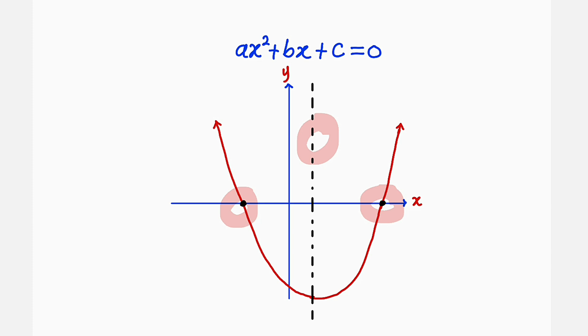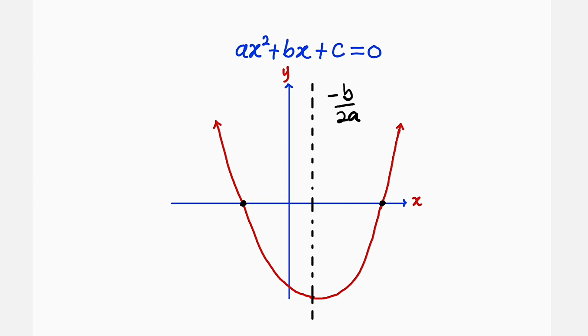In the process, we are going to obtain the general formula used for solving quadratic equations. But without these roots, the line of symmetry can always be obtained as negative b divided by 2a.